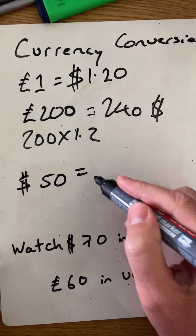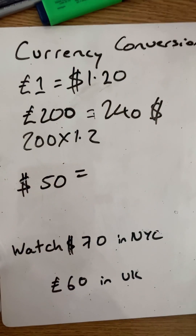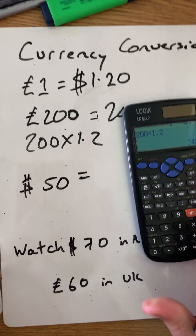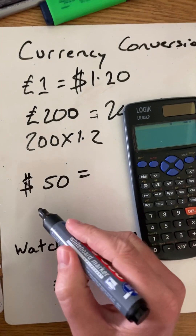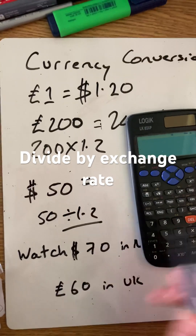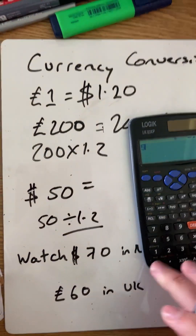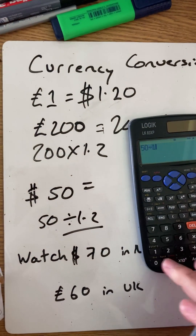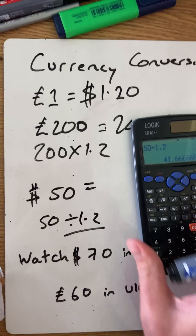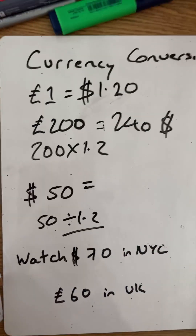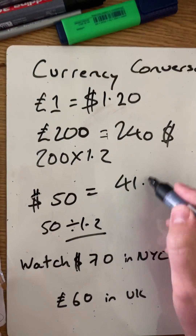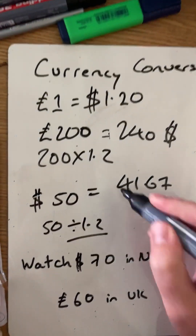Now say we come back from that trip and we have 50 US dollars. If you want to change that back into pounds, you do 50 divided by 1.2, which gives £41.67.